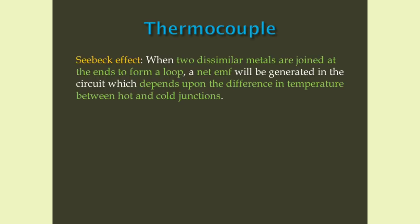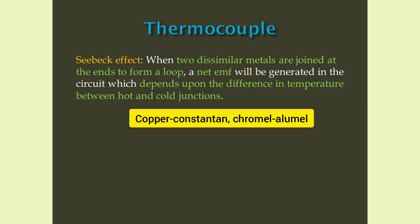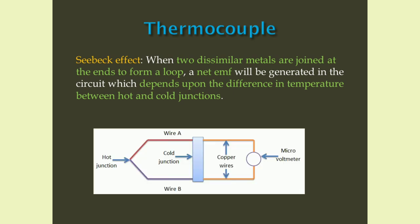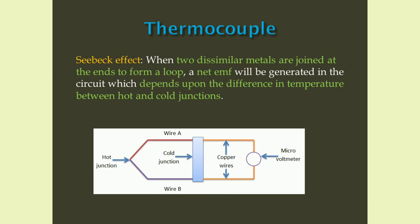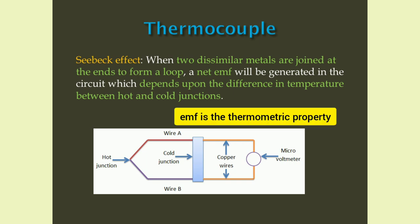Thermocouple. It is based on the Seebeck effect — when two dissimilar metals are joined at the ends to form a loop, a net EMF will be generated in the circuit, which depends on the difference in temperature between hot and cold junctions. Copper-constantan, chromel-alumel, etc. are some of the metal combinations. In the figure, two dissimilar metal wires, wire A and wire B, are used. The hot junction is our test junction. The cold junction is the reference junction, which is usually kept at 0 degree Celsius. EMF will be generated in the circuit because of the Seebeck effect. EMF is the thermometric property and is recorded using a microvolt meter, and using that EMF we can measure the temperature difference.